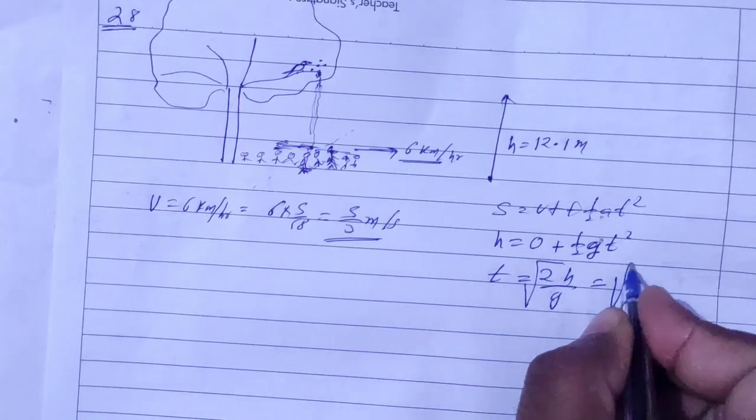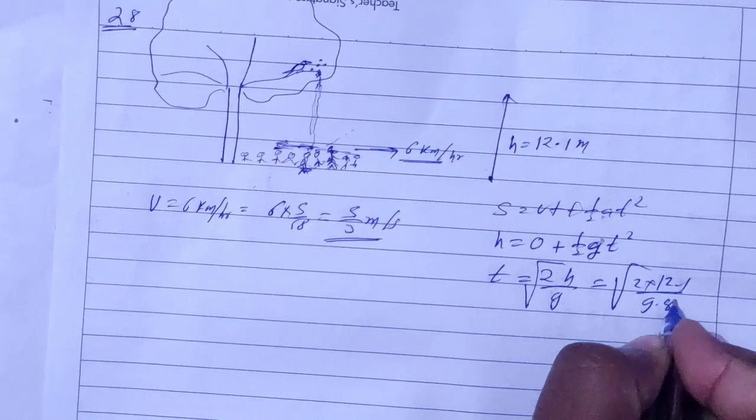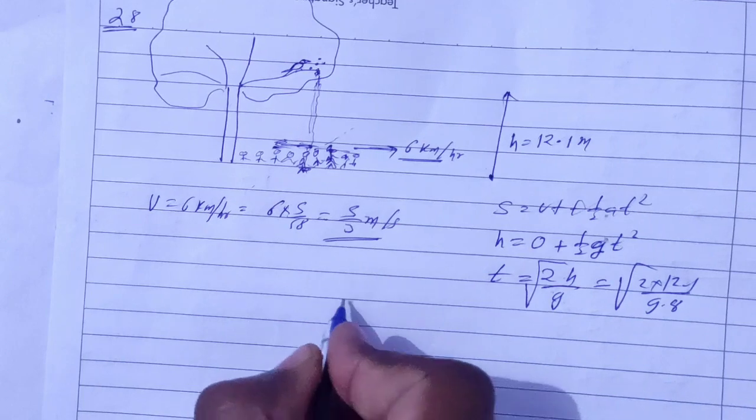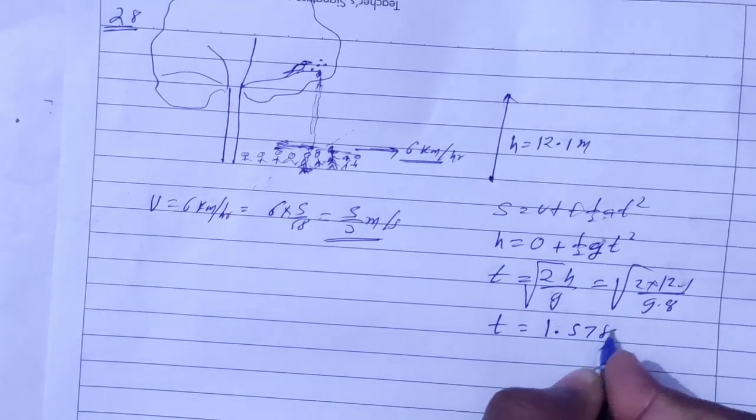Putting the values: 2h is equal to 12.1, g is equal to 9.8. The time the berry takes to fall is 1.57 seconds.